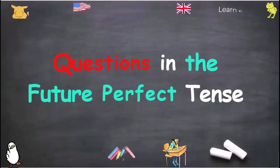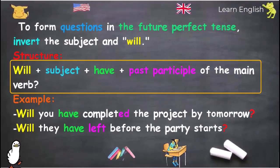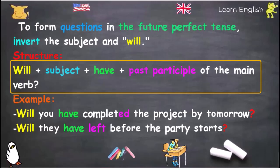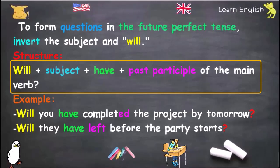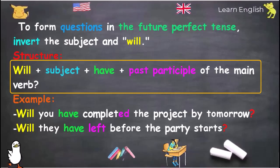Questions in the Future Perfect Tense: To form questions, invert the subject and 'will.' Structure: Will + subject + have + past participle of the main verb. Examples: 'Will you have completed the project by tomorrow?' 'Will they have left before the party starts?'